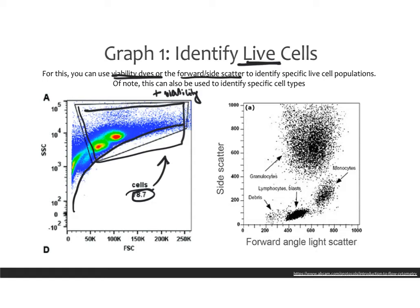You can also use scatter to identify different populations of cells, not just live and dead. You can identify debris, but also granulocytes, which are typically larger compared to monocytes, compared to blasts, which are very tiny. So scatter can allow you to identify live cells or specific cell types. But most labs, unless you're specifically in immunology, will be doing it by the simpler method.